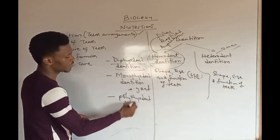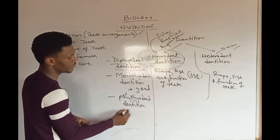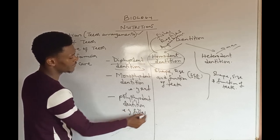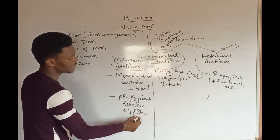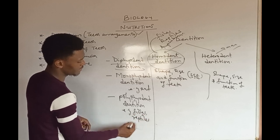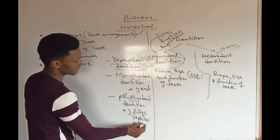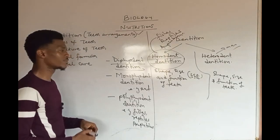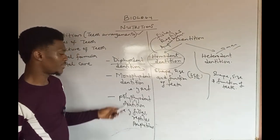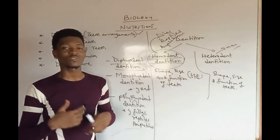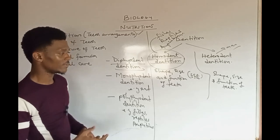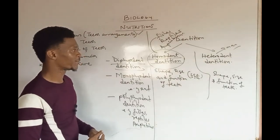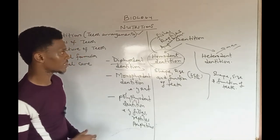Examples of organisms that exhibit polyphyodont dentition include the fishes, the reptiles, and the amphibians. These organisms continuously shed off and discard their teeth throughout their lifespan.